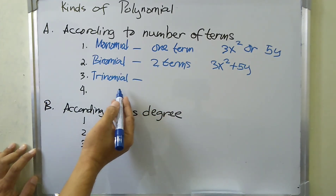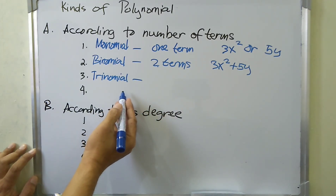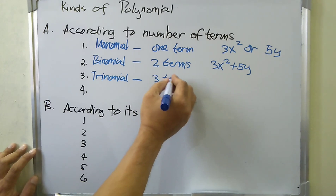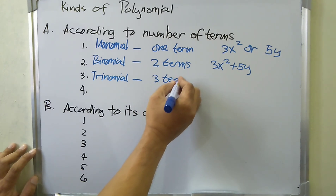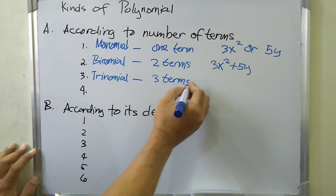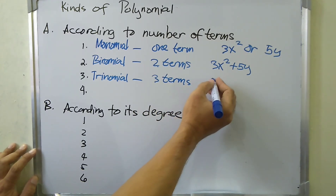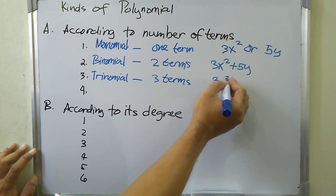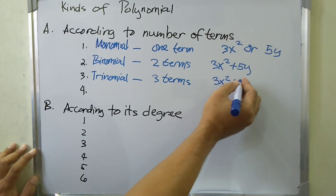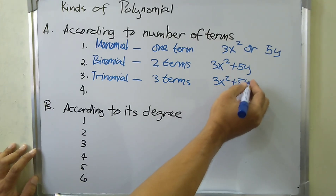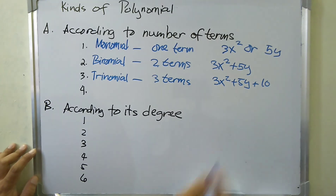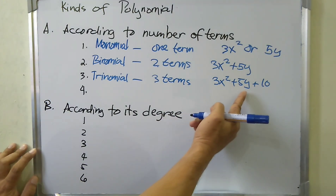The next is trinomial. A trinomial is a kind of polynomial with three terms. For example, we have 3x squared plus 5y plus 10, so there are three terms.